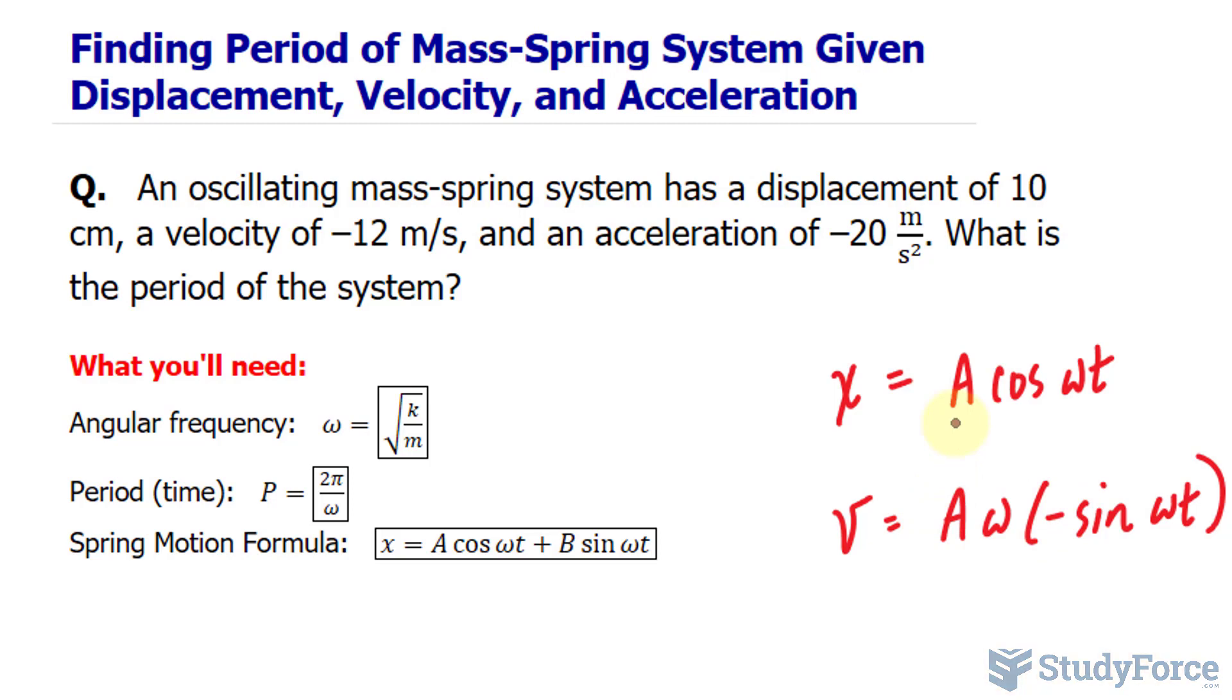Now, subbing in t is equal to zero into this function would give us an output that is zero, when in fact we're expecting it to be negative 12 meters per second. The reason why it would be zero is because we have sine. Obviously, this is a problem because had we started with sine for the displacement function, the output would have been zero, and that wouldn't have made much sense given what we're told about the initial displacement. Starting with cosine leads us to a situation where the velocity doesn't make any sense.